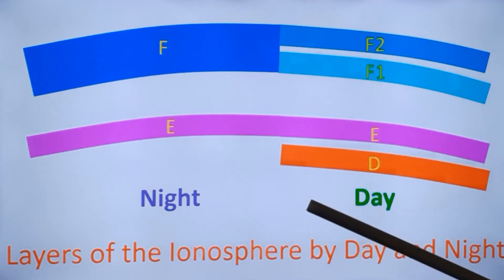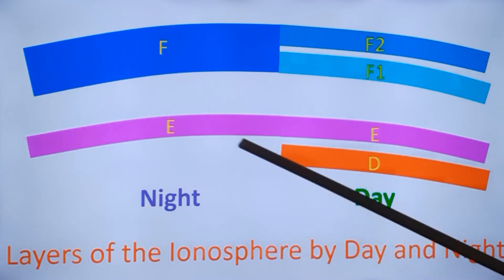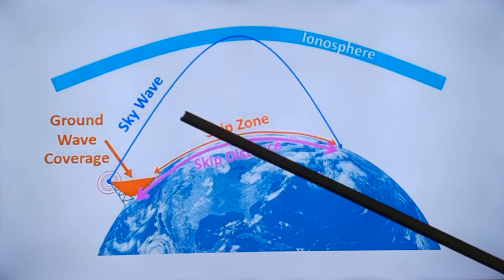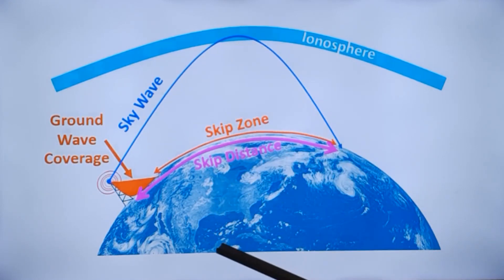That is why for VHF and UHF and higher ranges of frequency, you do not have this sky wave propagation from the transmitter into the sky back to the earth. These are the sky waves which we are talking of.